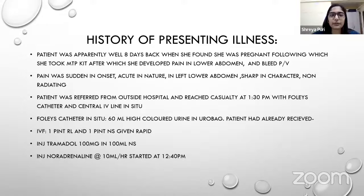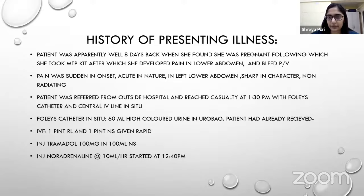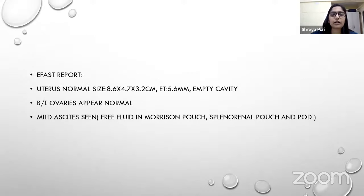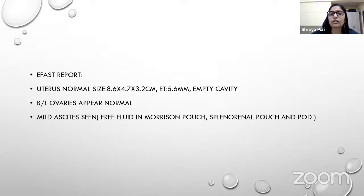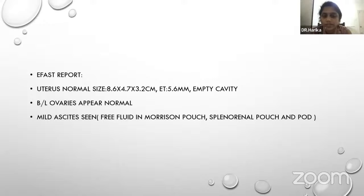The patient had already received one pint of Ringer's lactate and one pint of normal saline given rapidly. Injection Tramadol 100 mg in 100 ml NS and noradrenaline at a rate of 10 ml per hour was started at 12:40 pm. The EFAST report showed the uterus was of normal size with empty cavity; bilateral ovaries were normal, but there was mild ascites with free fluid in Morrison's pouch, splenorenal renal pouch, and the pouch of Douglas.